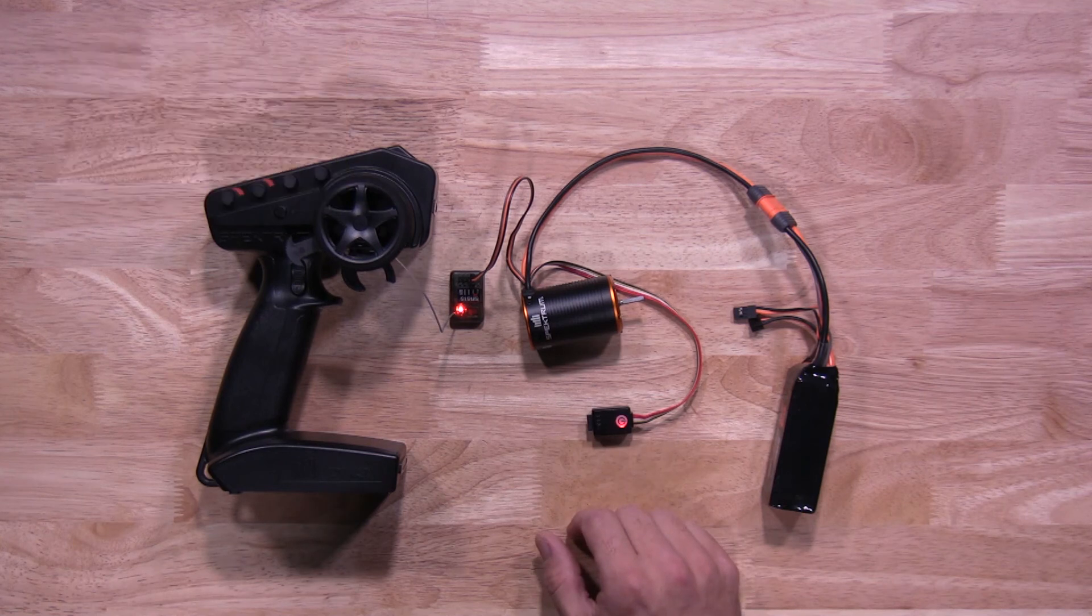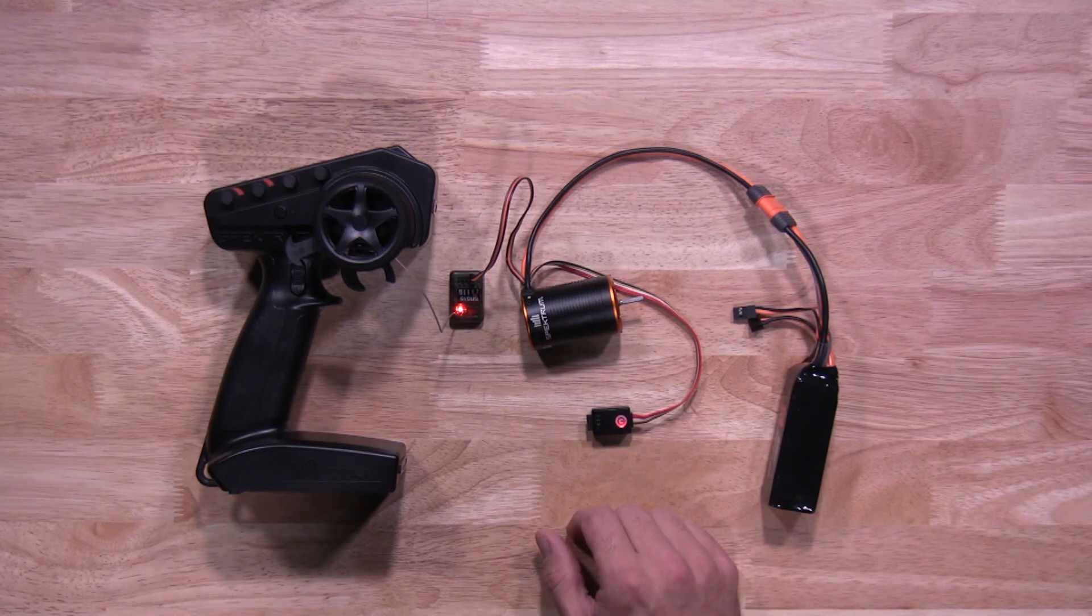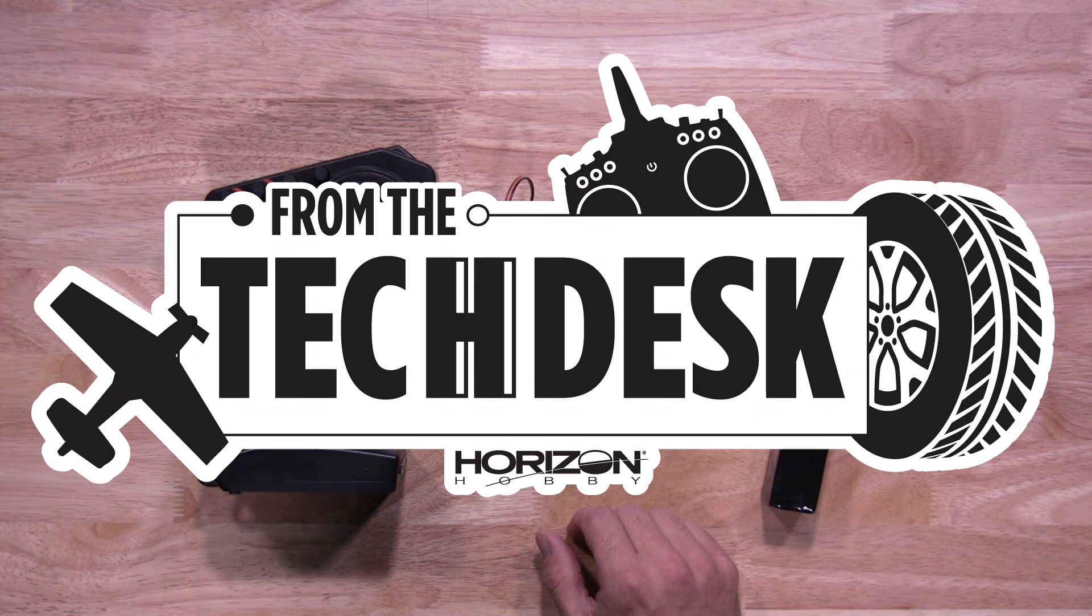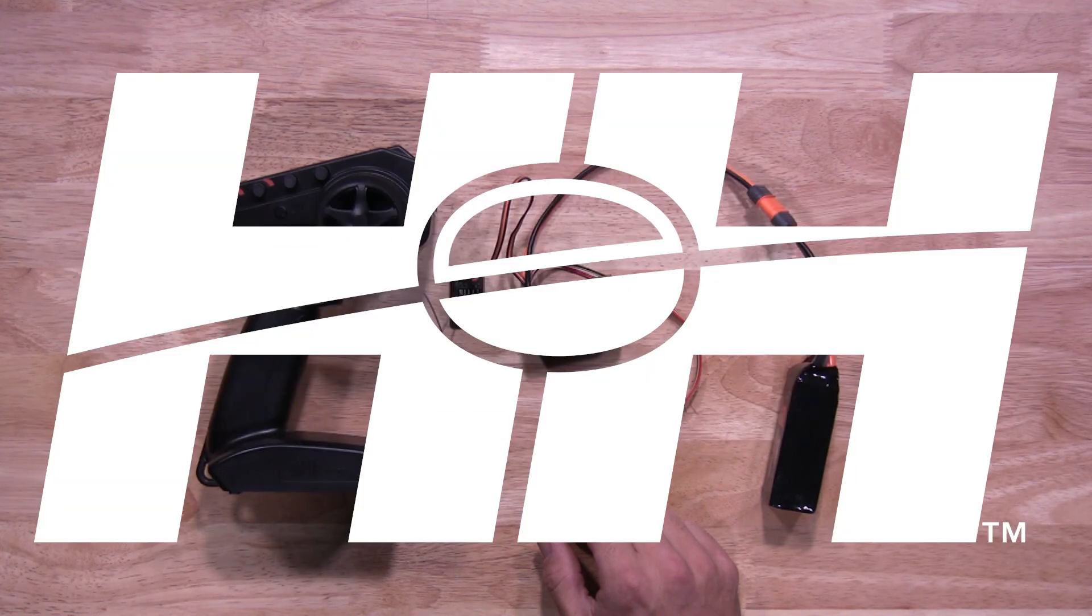There you have it. That's how quick and easy it is to calibrate the Firma 2-in-1 Crawler Motor ESC Combo by Spektrum. Thanks again for watching. Stay tuned for more tips, tricks, and videos from RC experts at Horizon Hobby.